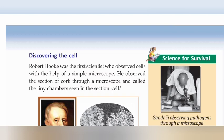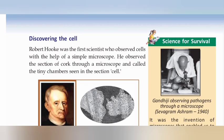Robert Hooke was the first scientist who observed cells with the help of a simple microscope. Robert Hooke observed the section of cork through a microscope and called the tiny chambers seen in the section 'cell'.